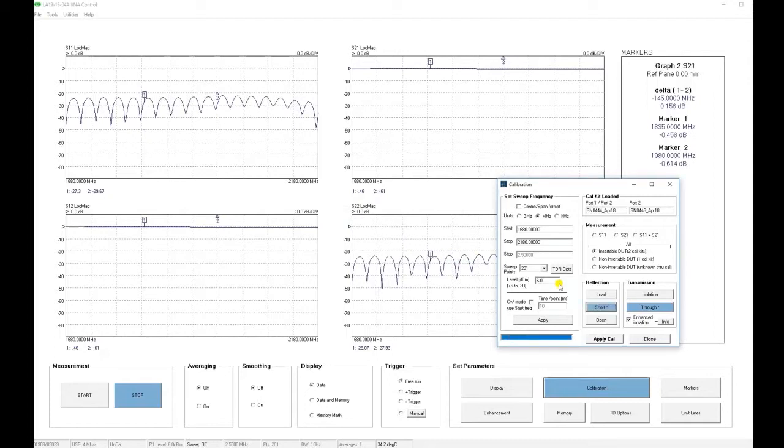The measurement has been done, and now we go to the isolation step. This time, we need a short on port 1, and an open on port 2. We make the connections, and click OK.